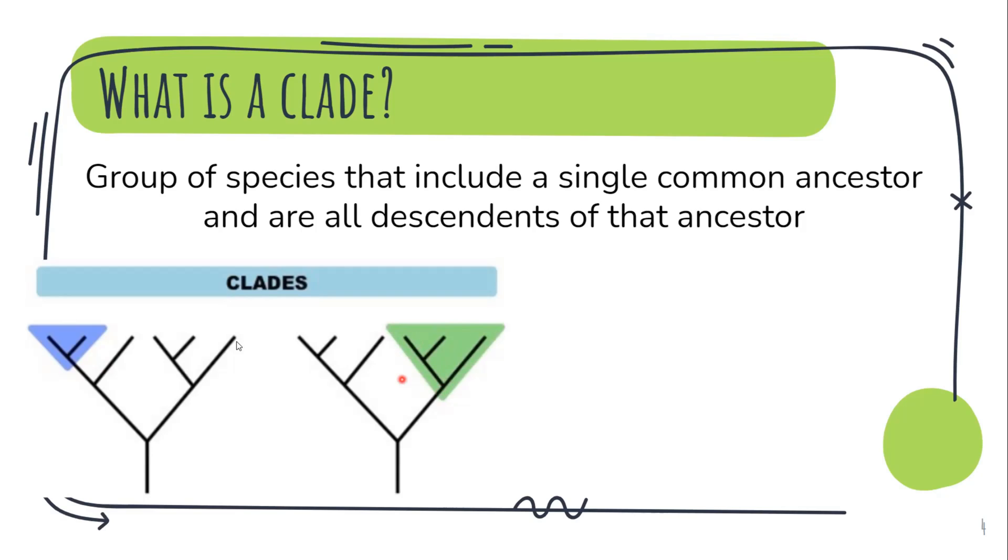Now one thing I want you to remember is the ends of all of these are called as taxons. So these represent a taxon. Taxon 1, 2, 3 and so on.